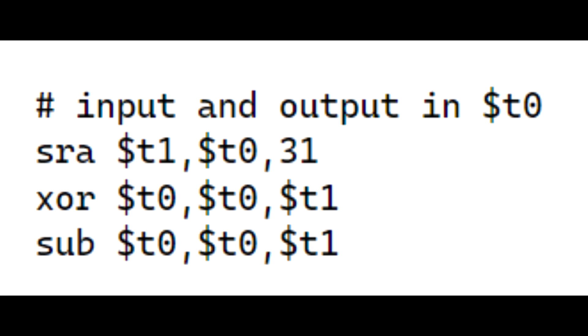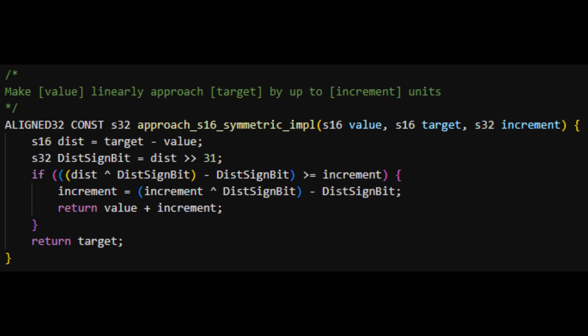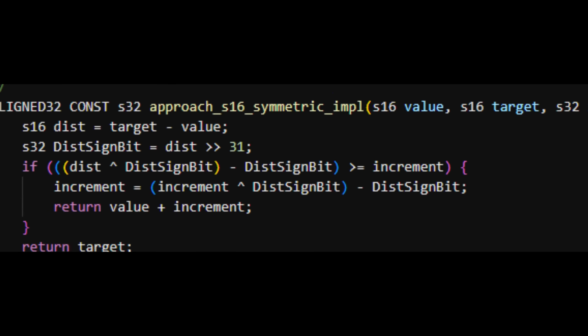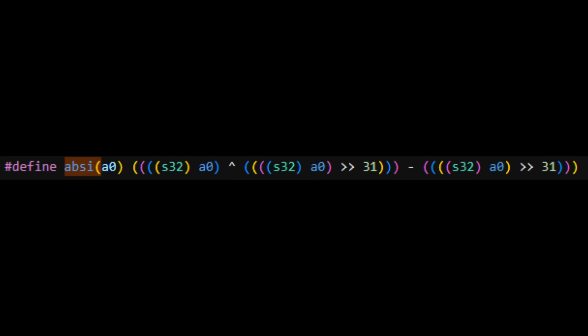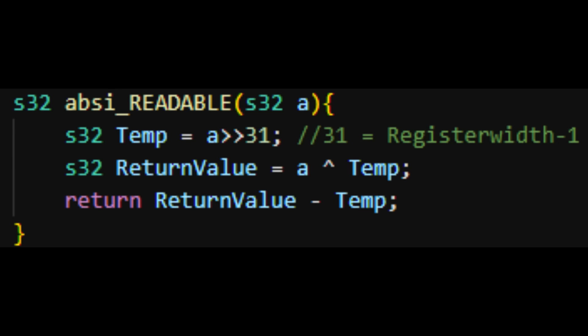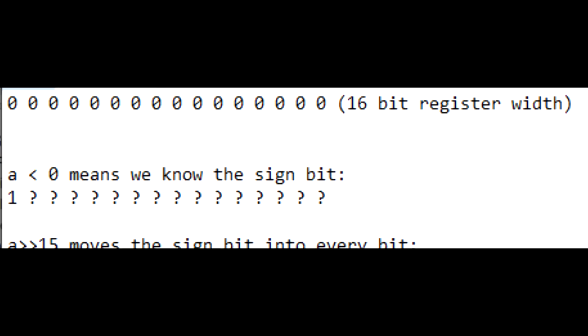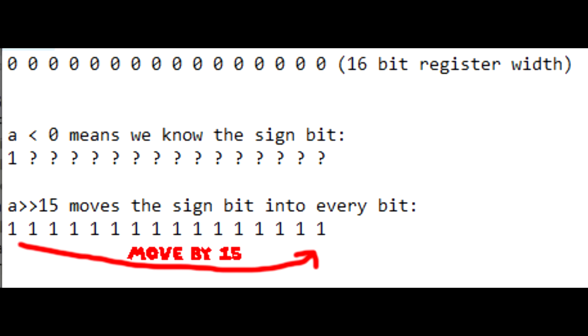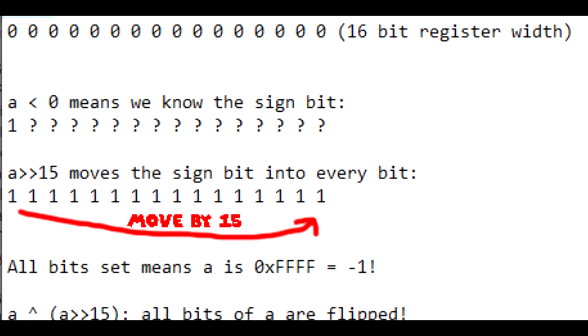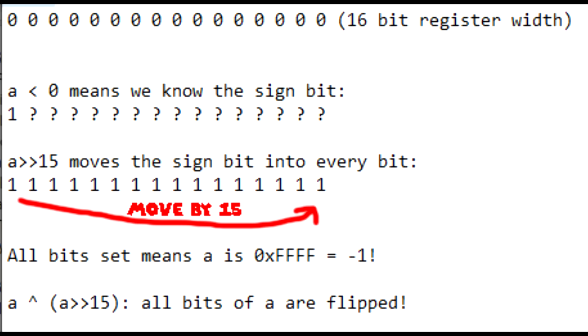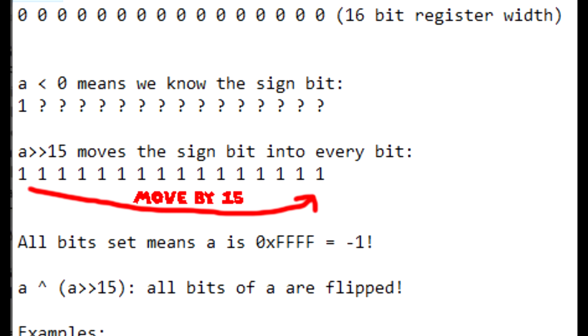We'll look into optimized subroutines the compiler inserts to boost our own code. We'll need to go back to approach_s16_symmetric. Let's look at the absi function first — it returns the absolute value of an integer in three cycles. If we right-shift a value by register width minus 1, we fill the register with the sign bit. For a negative value, this fills the register with all 1 bits. If we XOR all the bits with this result, we flip every single bit of our variable. Let's take a few example inputs: minus 1 is 0xFFFF, becomes 0; minus 32768 (0x8000) becomes 0x7FFF, which is 32767; minus 16384 (0xC000) becomes 0x3FFF, which is 16383.